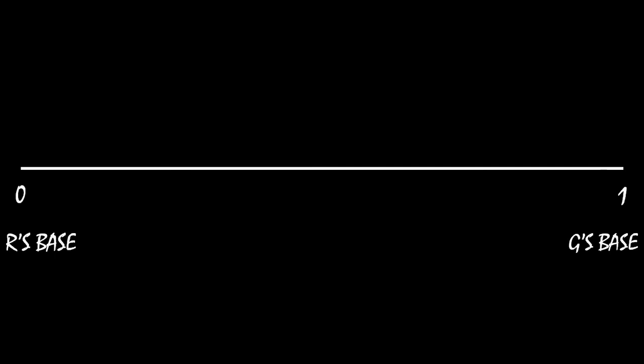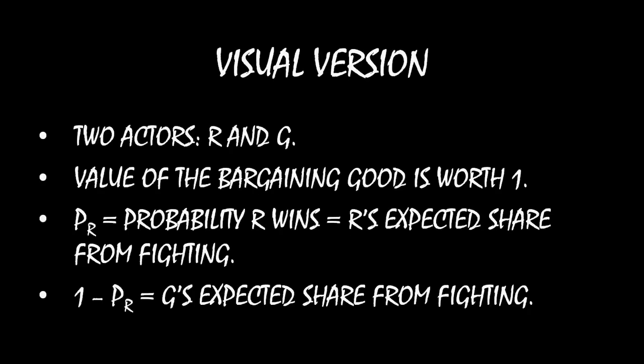Should we draw it closer to zero? Should we draw it closer to one? Where we draw it depends on the outside options that the actors have — namely, what do they get from war? Instead of bargaining, they could go to war. Remember that PR represented the probability that R wins, but it also is R's expected share from fighting. If the rebel group wins, they control the entire good, so they capture everything. And if everything is standardized to being worth one, and they win the war with probability PR, then PR times one is simply PR. So PR not only represents the probability R wins, but also represents R's expected share from fighting. Similarly, G's expected share from fighting is one minus PR.